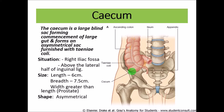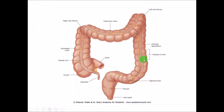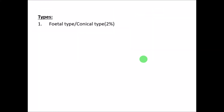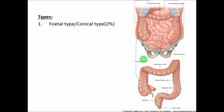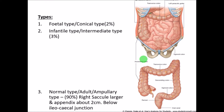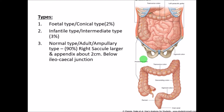The shape is asymmetric — there is one larger sac and a smaller sac on the other side. There are different types of cecum. The most primitive is the fetal or conical type, present in about 2 percent. The second is the infantile or intermediate type, present in 3 percent. The commonest is the normal adult or ampullary type, where one sac is larger than the other, present in almost 90 percent of people.